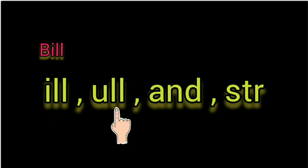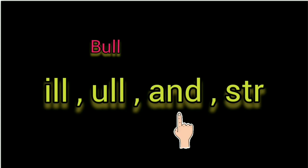A double L — ALL as in ball. I double L — ILL as in bill. U double L — ULL as in bull. AND — AND as in land, band.